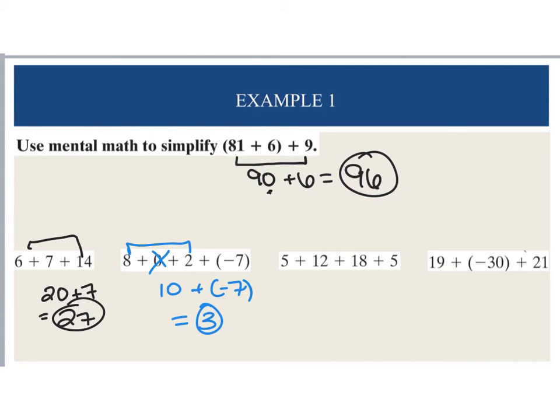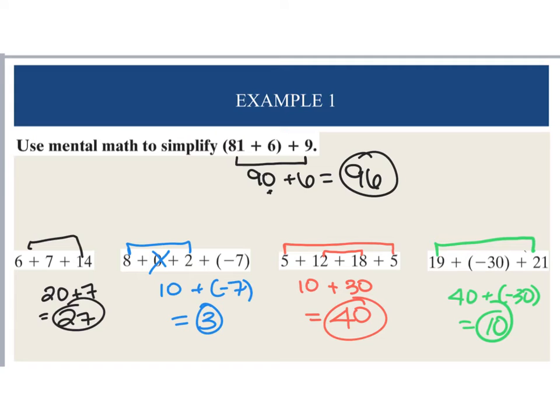Now, when I come over to the next part, where we have 4 numbers, I'm going to try to group things together that are going to work out nice for me. So 5 and 5 will give me 10, and then 12 and 18 will give me 30, so I can see real quickly that this is going to give me 40. And finally, for this last one, if I take 19 and 21, I can see that I'm going to end up with 40, then I'm going to add that negative 30, and this here is going to give me a positive 10. So we're just trying to group things together so it makes nice numbers for us to add mentally.